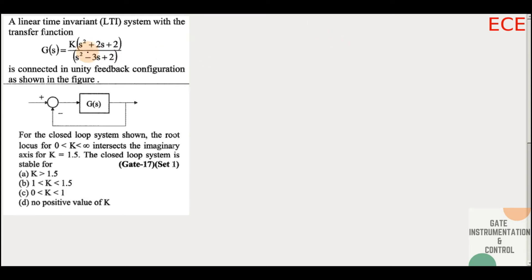Hello and welcome. Here we have a question: a linear time invariant system with the transfer function G(s) = k(s² + 2s + 2) / (s² - 3s + 2) is connected in a unity feedback configuration as shown in the figure. For the closed loop system, the root locus for 0 < k < infinity intersects the imaginary axis for k = 1.5. The closed loop system is stable for which one of the following conditions of k?